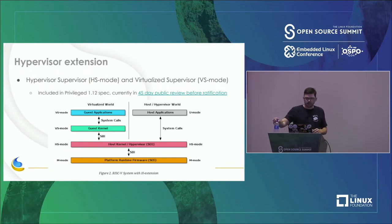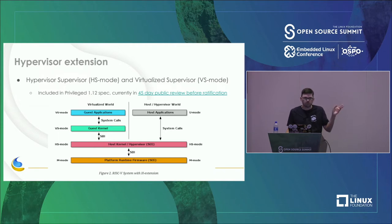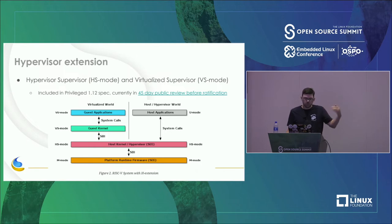Something exciting right now is the hypervisor extension. We usually have three modes: user, supervisor, and machine. The hypervisor extension adds HS mode (hypervisor supervisor) and VS mode (virtualized supervisor). Instead of just M mode to S mode, in between we have the hypervisor supervisor, then the virtualized supervisor where a guest kernel could run, and on top of that the virtualized user where guest applications run.